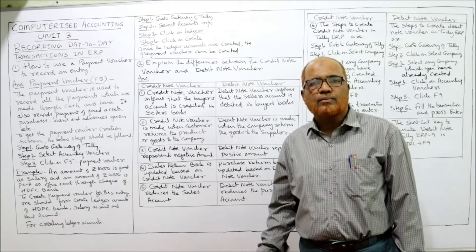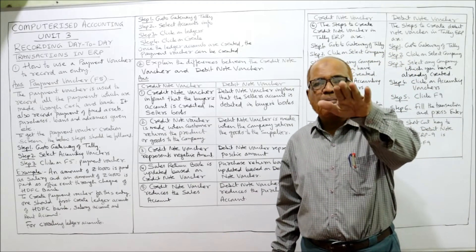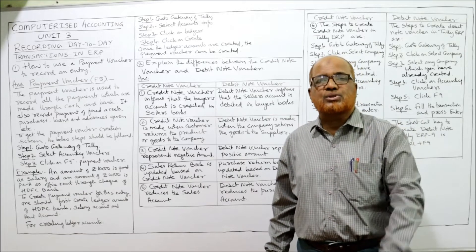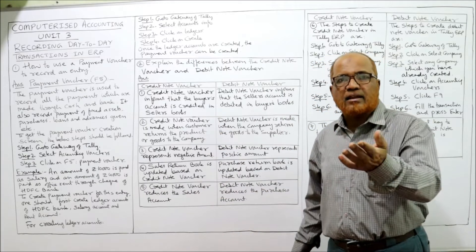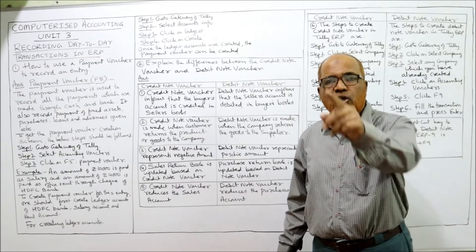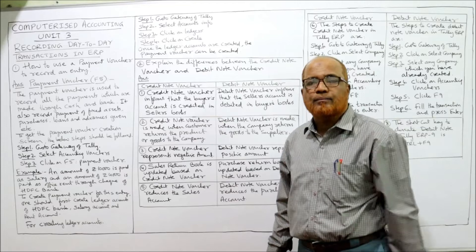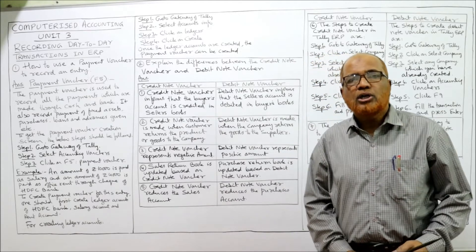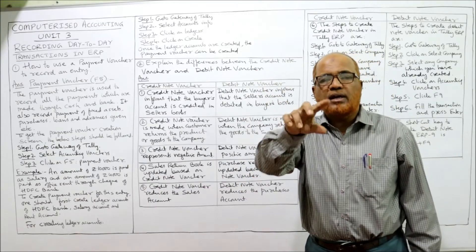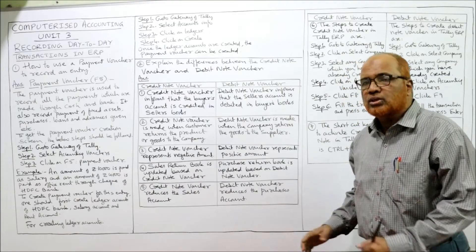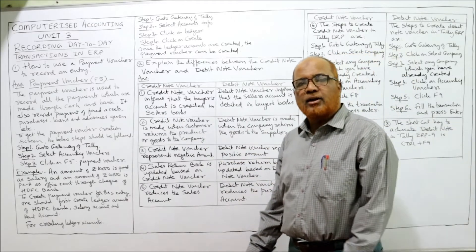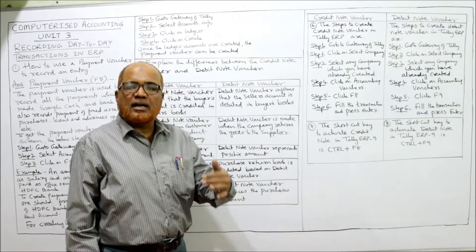The credit note voucher reduces the sales account, and the debit note voucher reduces the purchase account. The sales return is deducted from sales in the seller's books, and the purchase return is deducted from purchases in the buyer's books. These are the five differences between credit note voucher and debit note voucher.